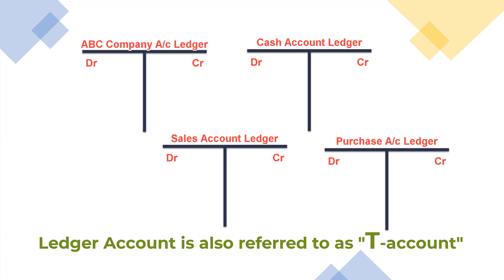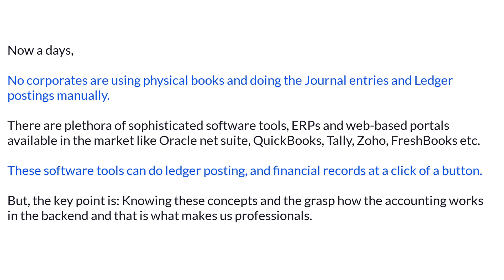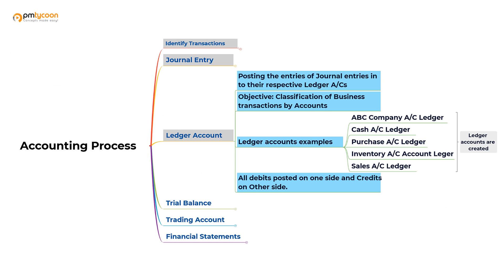A ledger account is also called a T-shaped account. When you write all the debit entries on the left and credit entries on the right, it takes the shape of the letter T — hence it is informally known as T-shaped accounts or T-accounts. Nowadays no one is doing journal entry posting manually because we have software systems in place. A software system would automatically create the ledger accounts with just a click of a button. But as a professional and learner we need to know what is happening in the backend.